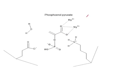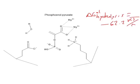The hydrolysis free energy is negative 62.2 kilojoules per mole, which is enough to make two ATP at 35 kilojoules per mole.